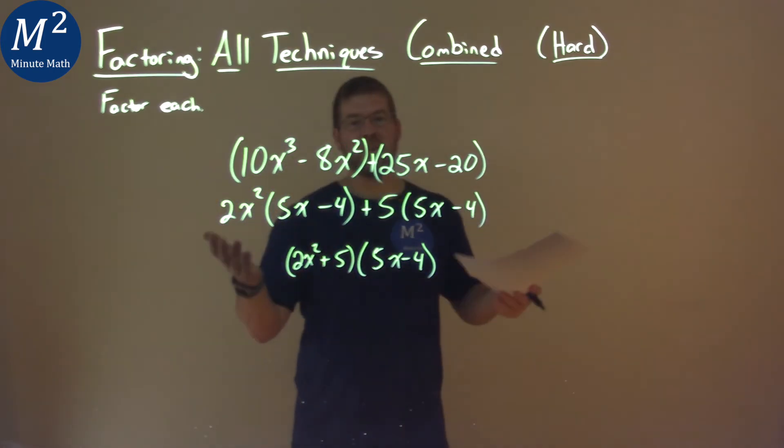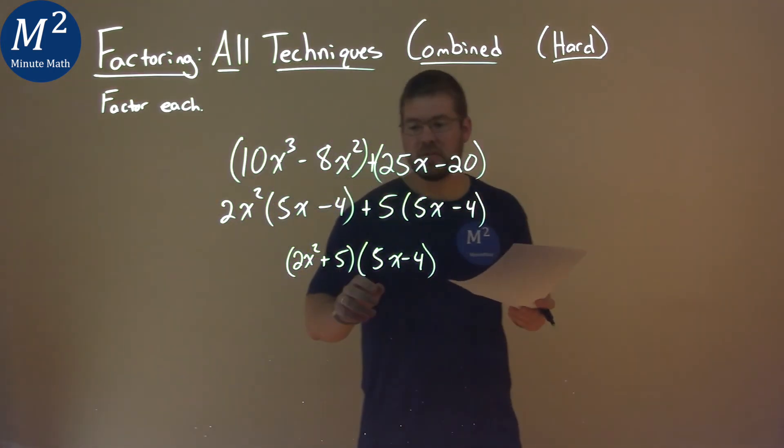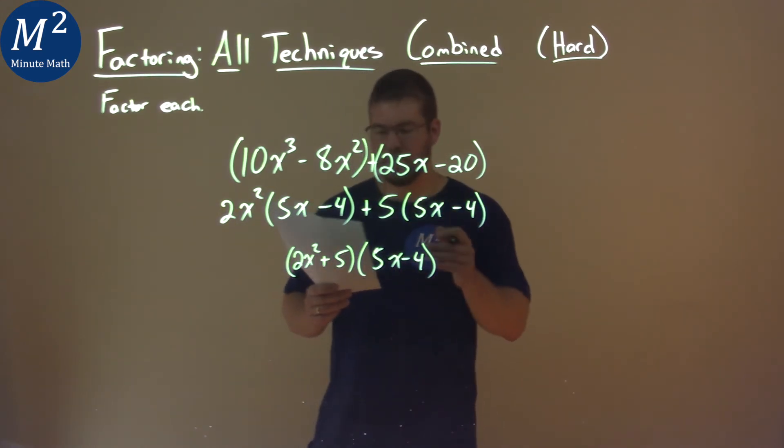And so actually we're done. We factor this completely. 2x squared plus 5 times 5x minus 4 is our final answer.